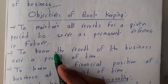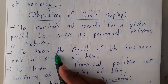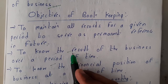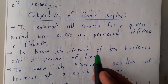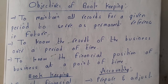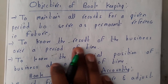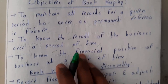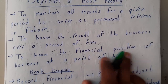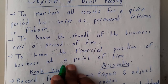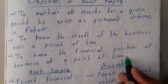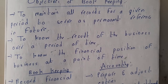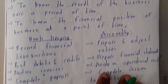For example, you take a book and write: on this date, I collected this much money from this person, the amount is this, and I gave it in this way. So bookkeeping helps to know the result of the business over a particular period of time and the financial position of the business at a point of time.